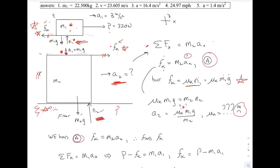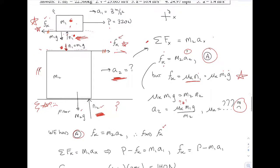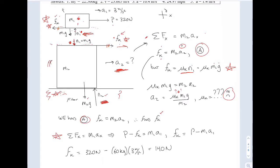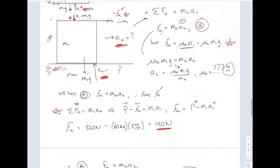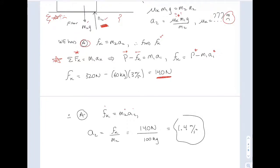Equation A was: applying F = ma to number two in the x direction, giving F_k equals M2*A2. To find F_k, go back and look at the top box. Apply F = ma to number one in the x direction: the only force in the positive x direction is P, kinetic friction points backward, and that equals M1*A1. Solve this for kinetic friction — I have P as a number and A1 is given as a number, so that gives me the kinetic friction force. Then go back to equation A: kinetic friction equals M2*A2, and now I have the number for kinetic friction, so I can solve for A2.